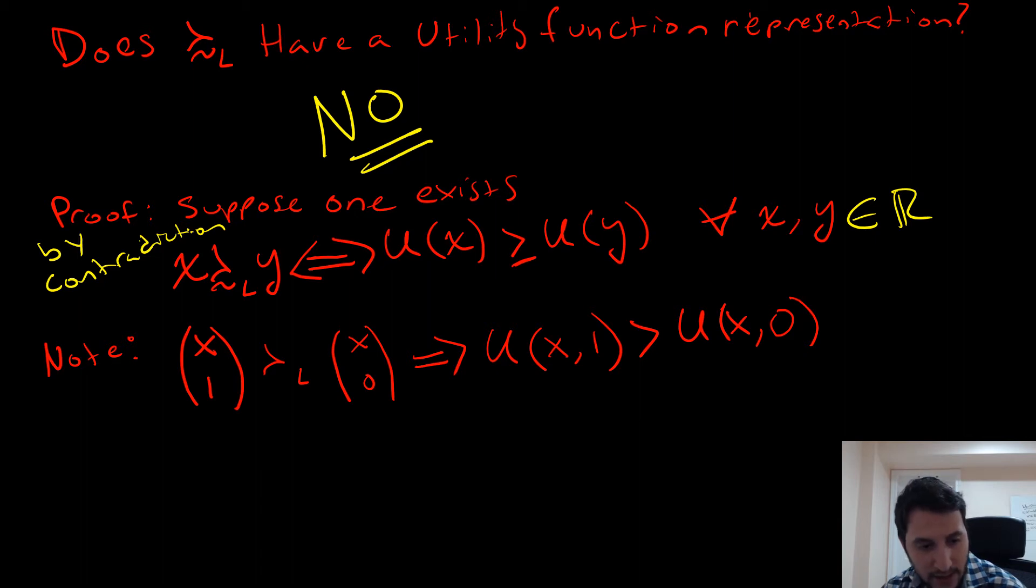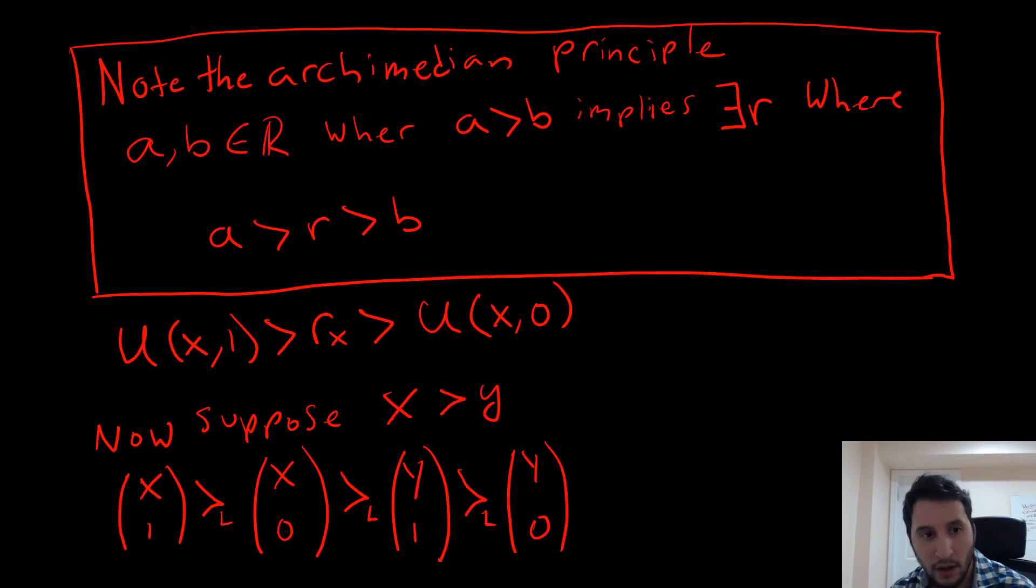We note that x1 is going to be lexicographically preferred to x0. So you might be confused thinking that this is a 2x2 case here. But remember, x is a vector of some sort or some sort of list here. And we're going to say that if this holds, we're going to have u of x1 being greater than u of x0, remembering that u is a mapping from R^n to R here. So the way that we're going to knock out this idea that there may be a utility function is by using this here. This is our secret weapon.